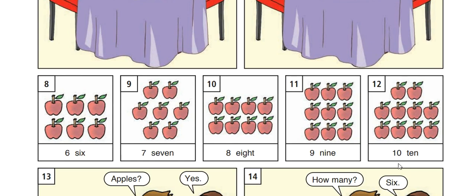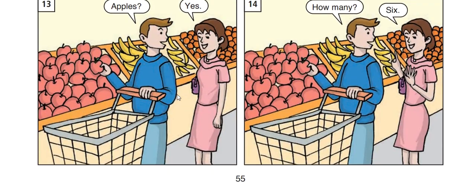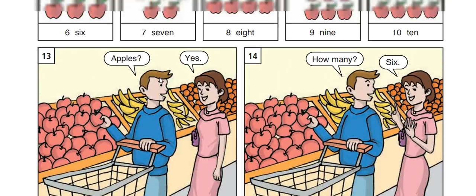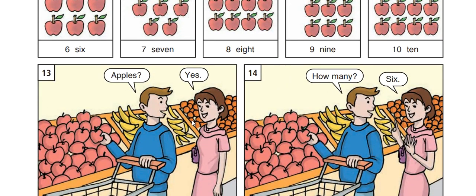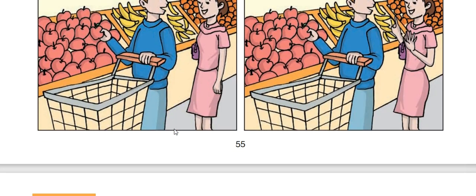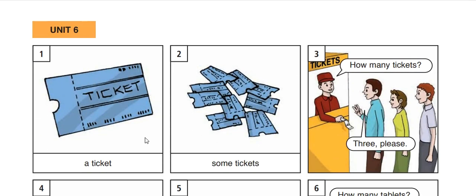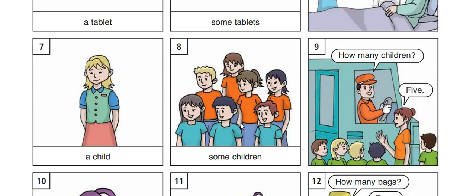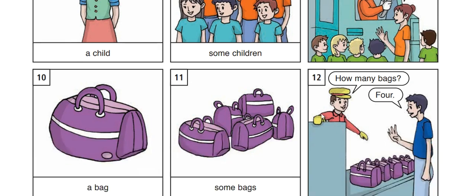Six, seven, eight, nine, ten. Six apples, seven apples, eight apples, nine apples, ten apples. Apples? Yes. How many apples? Six apples. She is answering six apples. How many? Countable nouns — how many apples? How many bananas? This is how we use countable nouns. A ticket, some tickets, how many tickets? Three, please. A tablet, some tablets, how many tablets? One tablet. A child, some children, how many children? Five children. A bag, some bags, how many bags? Four bags.